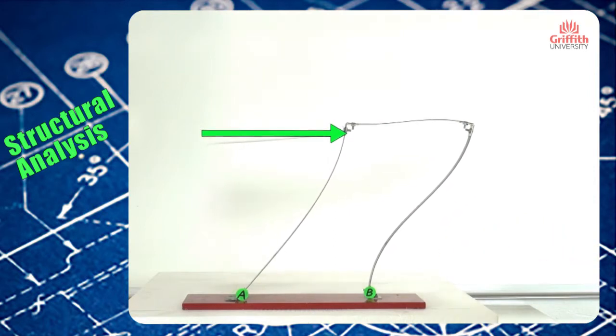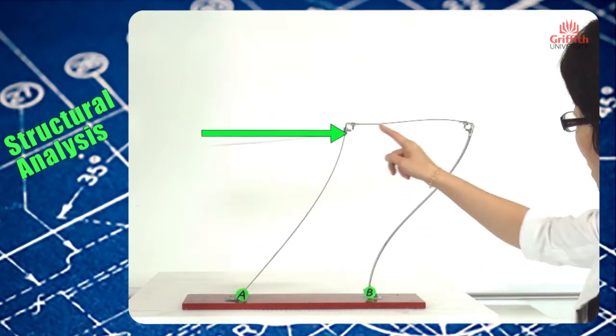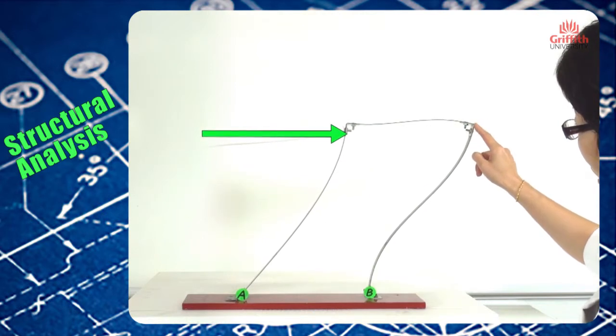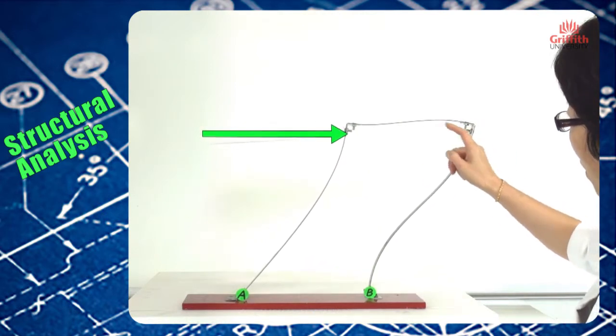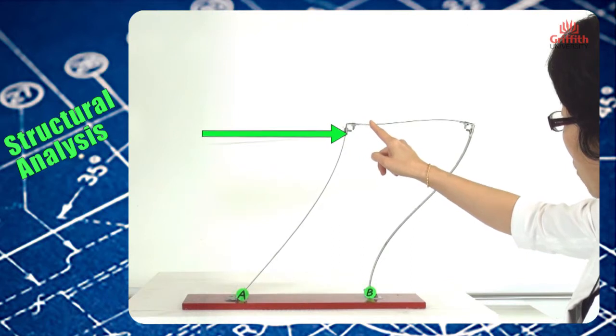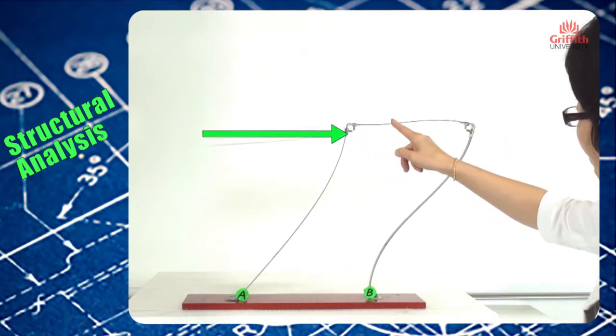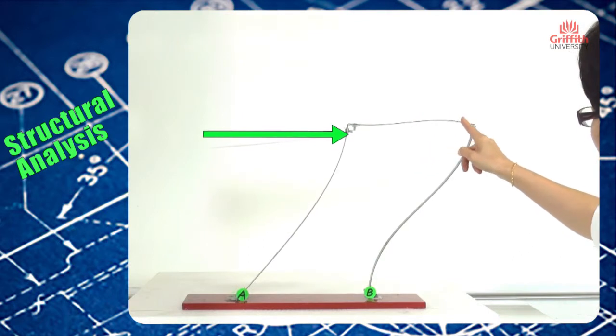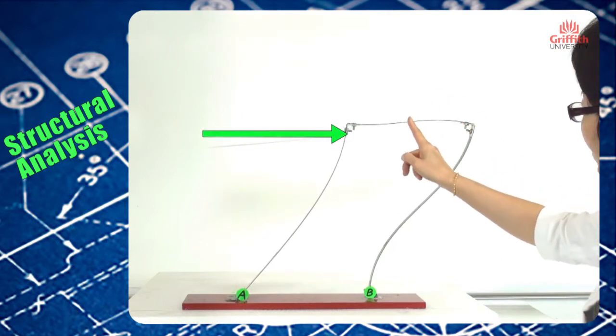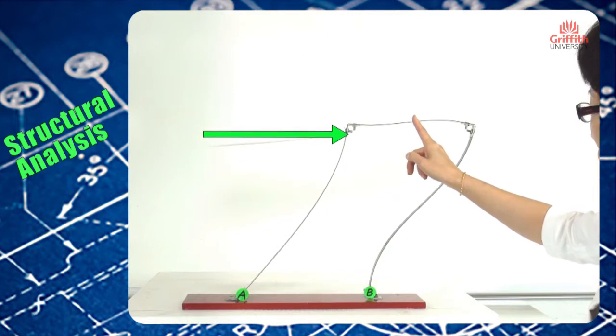And now look at the beam. Because of the rigid connection here and the restraints provided by the column, the beam also develops into an S-shape from concave up to concave down. So there is a contraflexor point within the beam also.